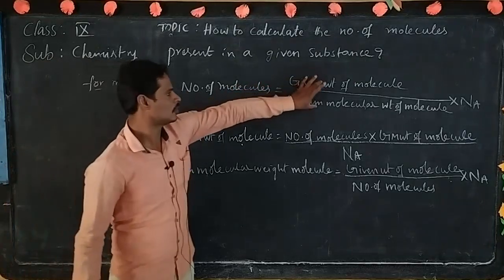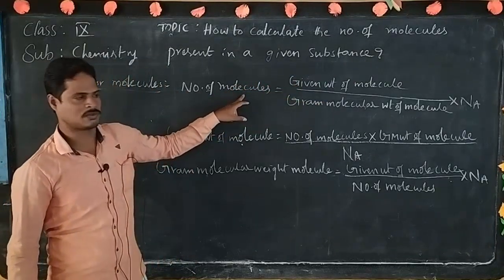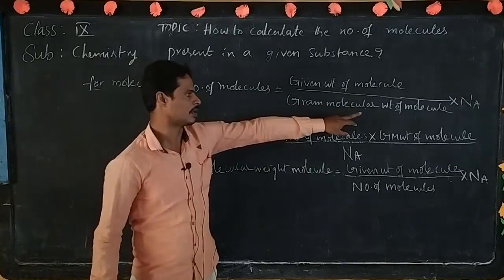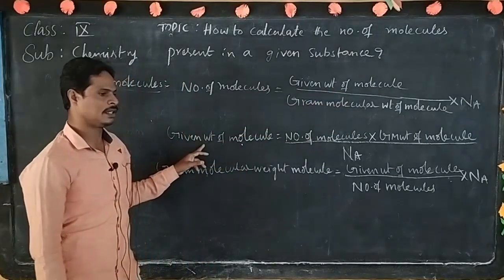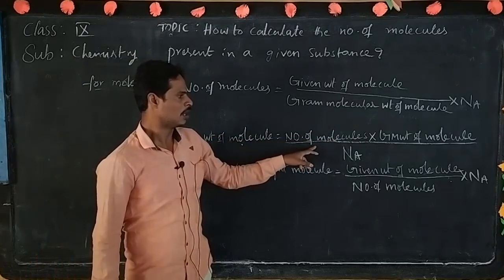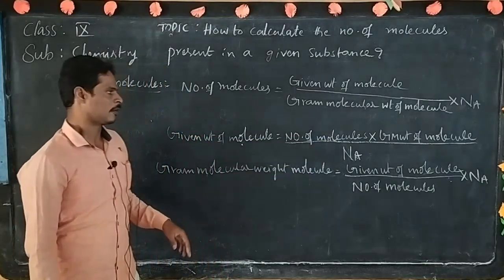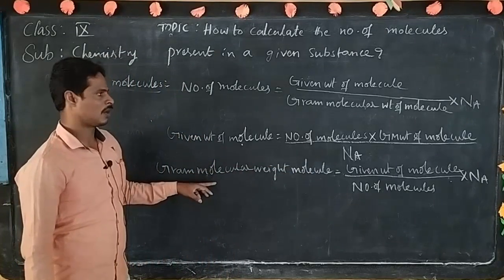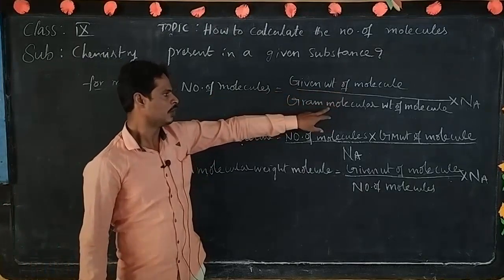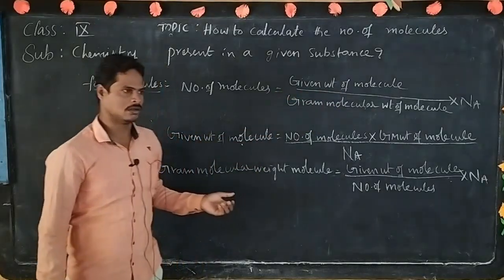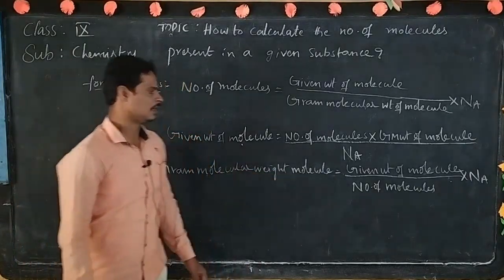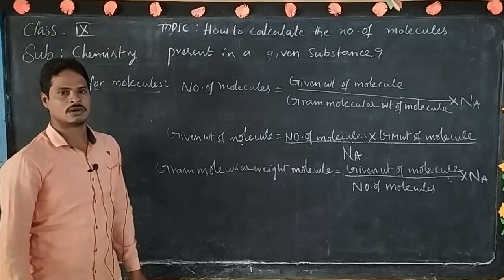First formula: when we know given weight of molecule and gram molecular weight of molecule, we directly apply the first formula to calculate number of molecules. Second formula: when we know number of molecules as well as gram molecular weight of molecule, and do not know given weight of molecule, we apply: given weight of molecule equal to number of molecules into gram molecular weight of molecule by Avogadro number. Third formula: when we know number of molecules and given weight of molecule, gram molecular weight of molecule equals given weight of molecule by number of molecules into Avogadro number.